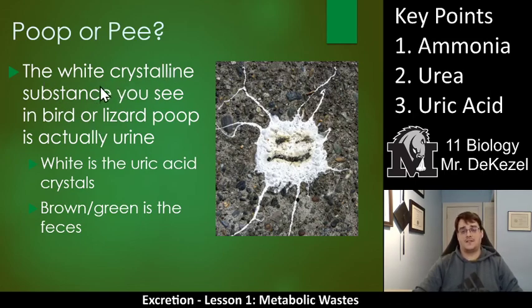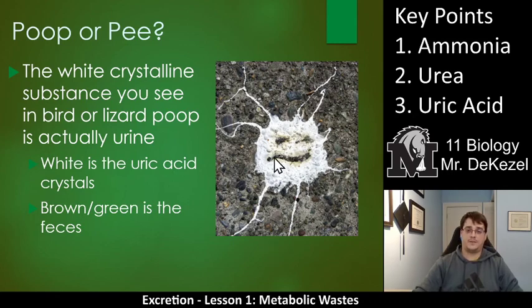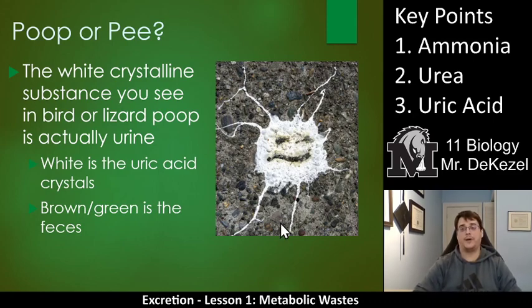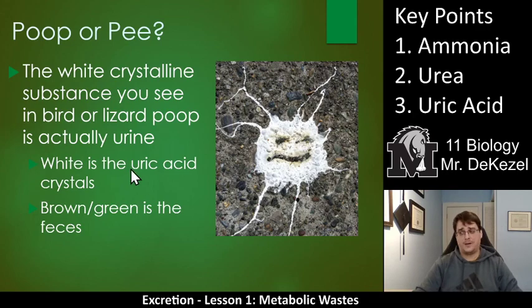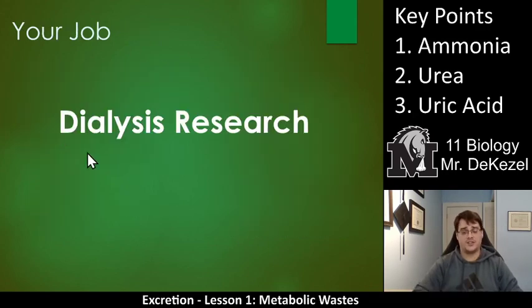The white crystalline substance that you see in bird or lizard poop is actually urine — that is uric acid, bird urine. The brown-green part is the feces. These substances need to be removed through a process like in your kidneys. But if you don't have working or excellent working kidneys, sometimes dialysis is needed. I'd like you to do some research on dialysis.